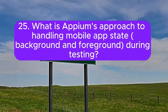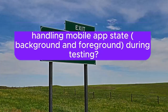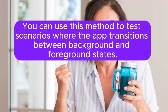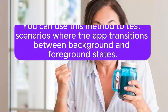25. What is Appium's approach to handling mobile app state, background and foreground, during testing? Appium provides the background method to push the app to the background for a specified duration. You can use this method to test scenarios where the app transitions between background and foreground states.